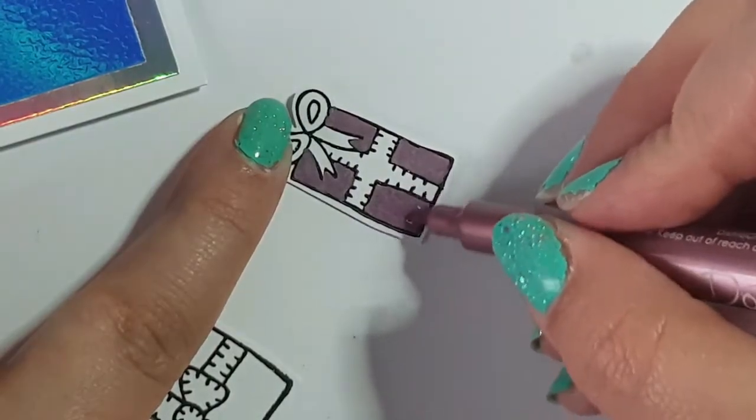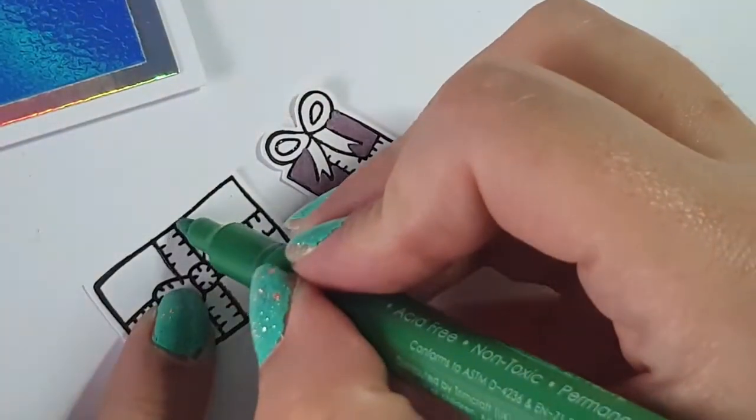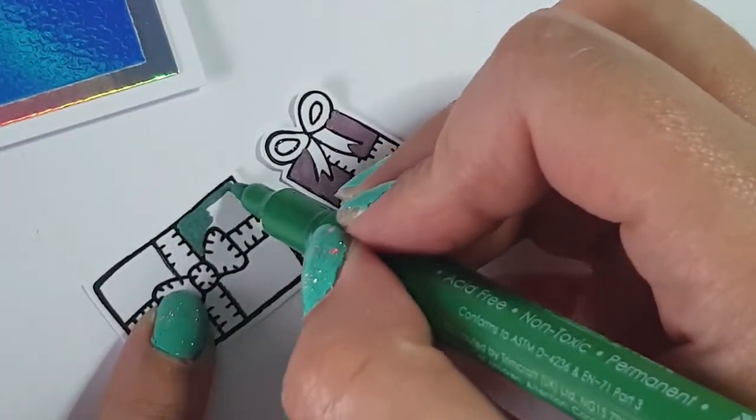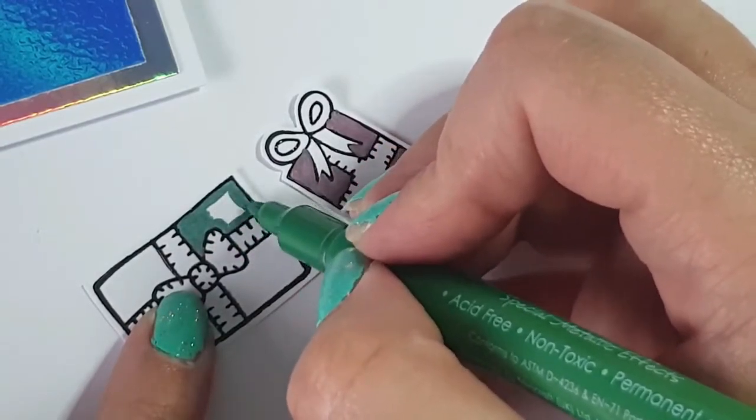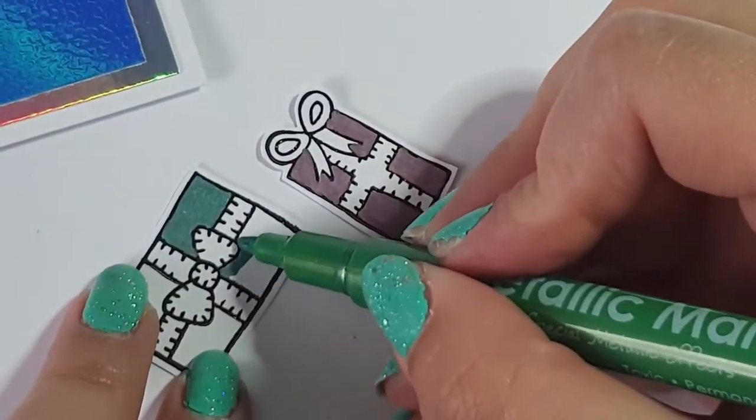So I chose to do pink background on this present and I think I did a gold bow on this one or silver. I can't remember, we'll see. It's been so long since I made this card and then I made a green present on this one, just picked kind of my favorite colors.